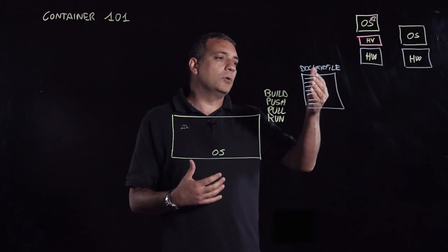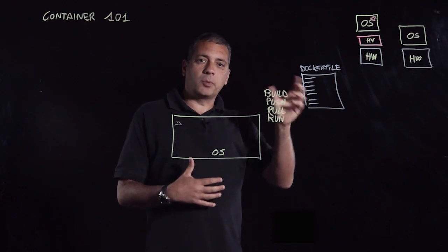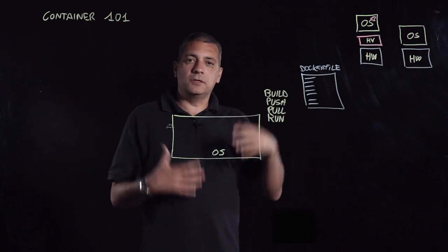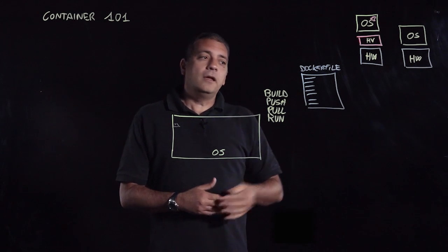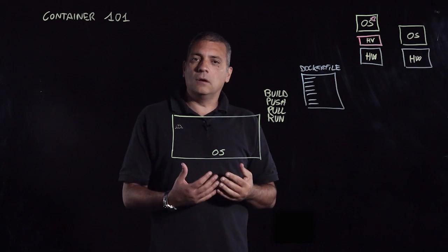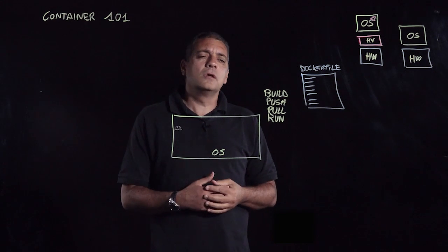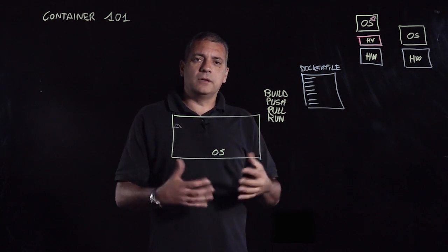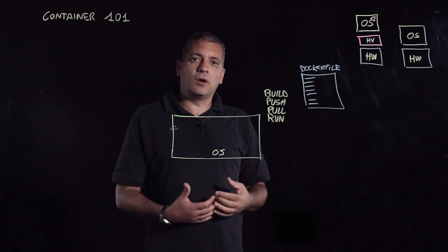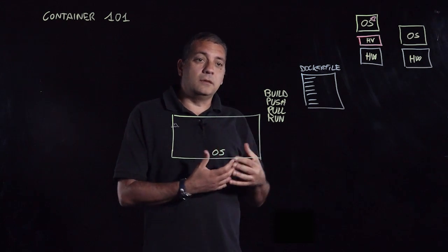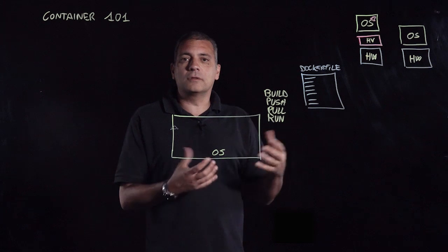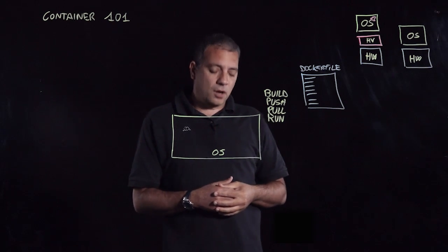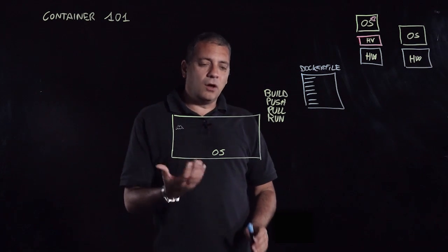These instructions are a codified version of what you would do to basically package your application. So think about being able to say, I want to use a particular OS version, that is usually the very first statement inside the Docker file. And then you go through a number of typically shell instructions that basically add all the dependencies that your application needs and your application. So you move your application inside the context of this Docker image.